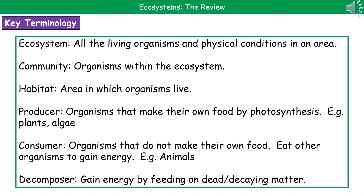If we're talking about the community, that's just the organisms within the ecosystem. The habitat is the area in which the organisms live. If we talk about a producer, we're talking about an organism that can make their own food by photosynthesis — good examples here are things like plants and algae.